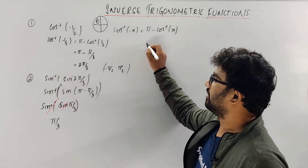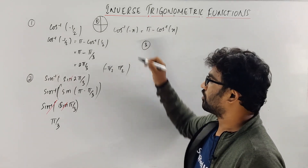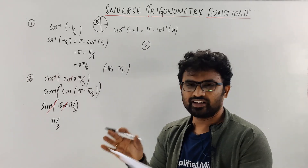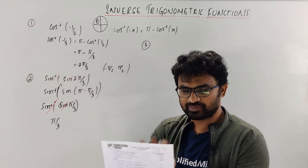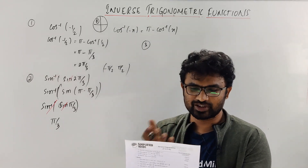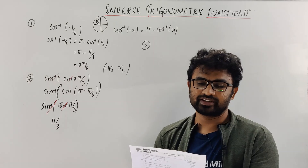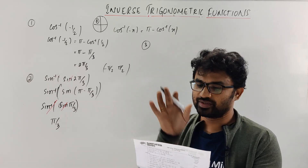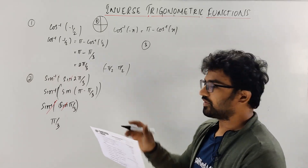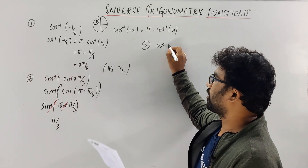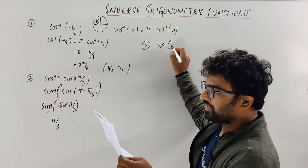Next question — let's take one more. I am writing the question; you don't need a separate PDF. It's already on the Simplified Minds app. If you look at one more thing — the properties — a question like: what is the value of secant⁻¹(x) + cosecant⁻¹(x)?